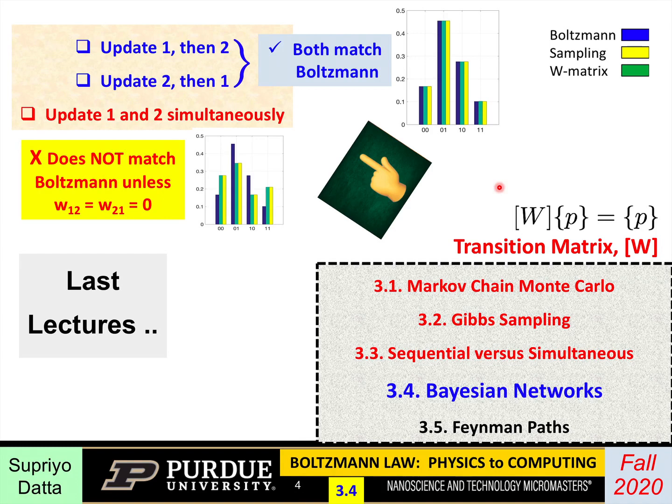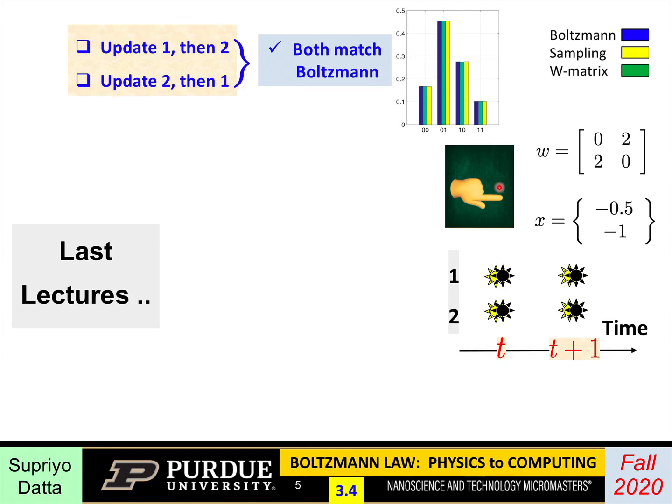In this lecture we'll talk about a different kind of network, which is different from the Boltzmann networks we have been discussing. In this network, the connections are one way. Boltzmann networks are always reciprocal — in the examples we used, the weight matrix was always symmetric.